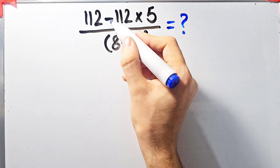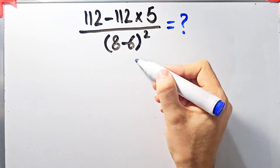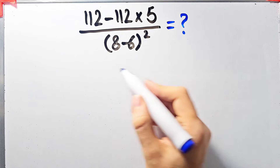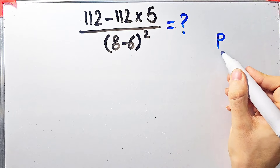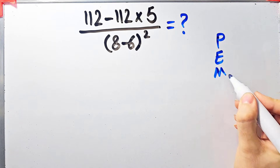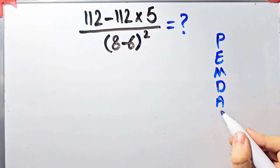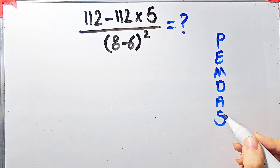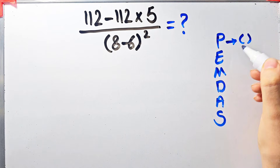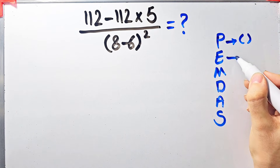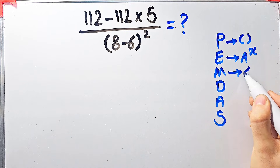In this question we have subtraction, multiplication, division, parentheses, and exponent. To solve this question we need to follow the order of operations, which is PEMDAS. PEMDAS shows the priority of the mathematical operations — if you don't pay attention to this rule you get the wrong answer. P stands for parentheses, E stands for exponent, M stands for multiplication.